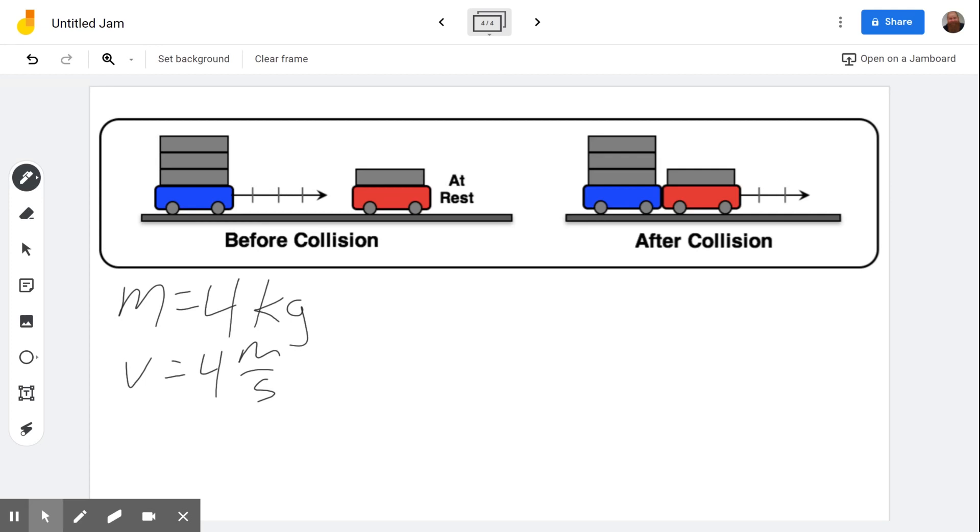Okay. And again, I'm just going to write p equals, and we'd multiply the two things together. We'd multiply four kilograms times four meters per second. And that would give you 16 kilogram meters per second.